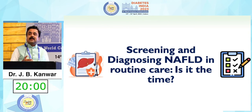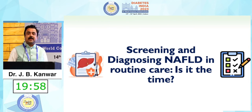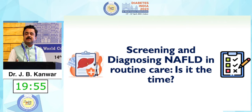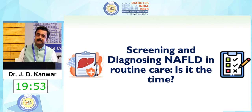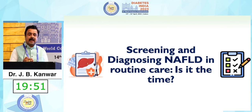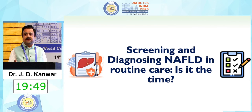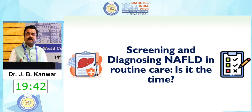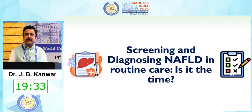As he was mentioning, the prevalence of NAFLD has increased over the years. Now the prevalence is about 25%, and it's more prevalent in type 2 diabetes and in patients with obesity and metabolic syndrome. It's about 70% prevalent in patients with type 2 diabetes and obesity. You can just imagine the number of people having NAFLD in India itself.